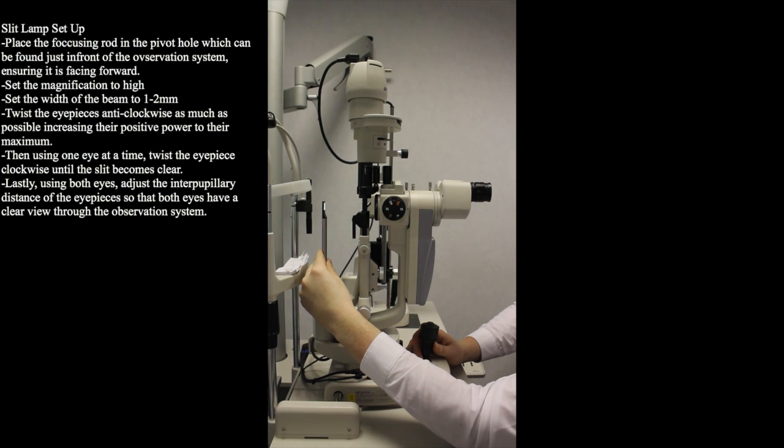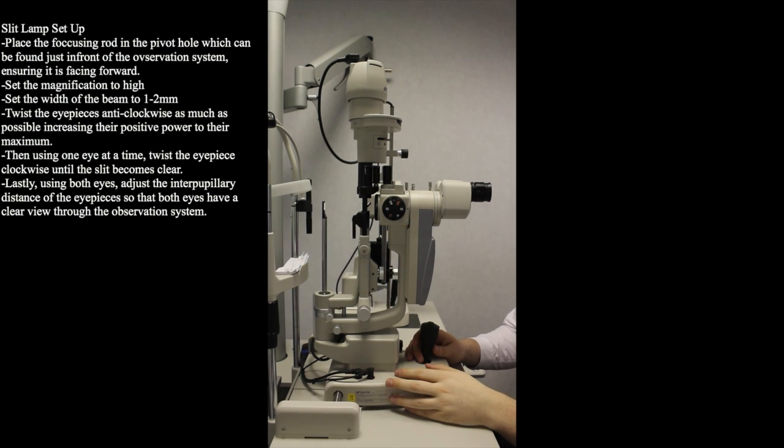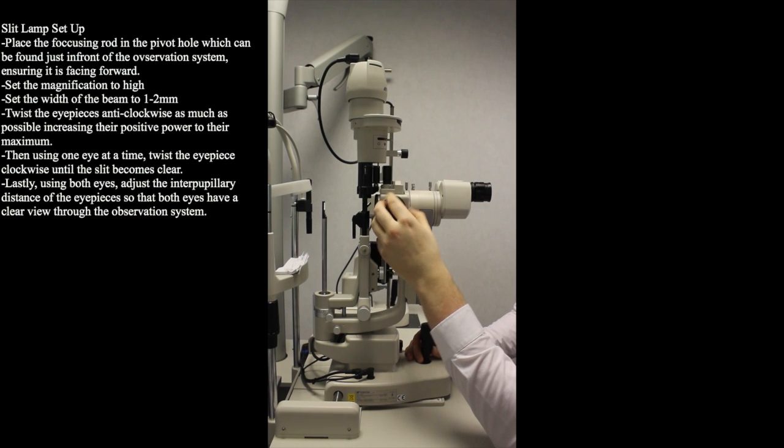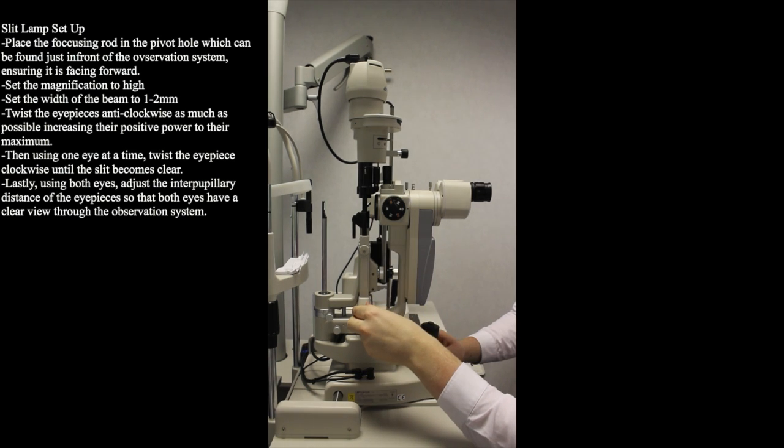It is important that when putting the focusing rod into the pivot hole that it is facing forward to prevent one eyepiece being focused at a different angle to the other. Firstly you must adjust the magnification to a high magnification and decrease the width of the slit.